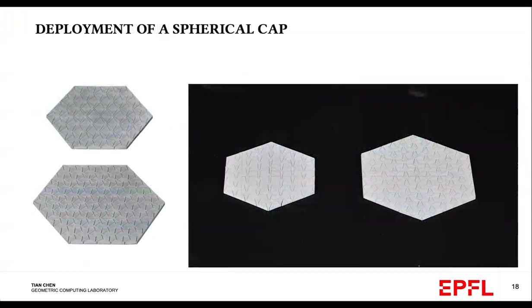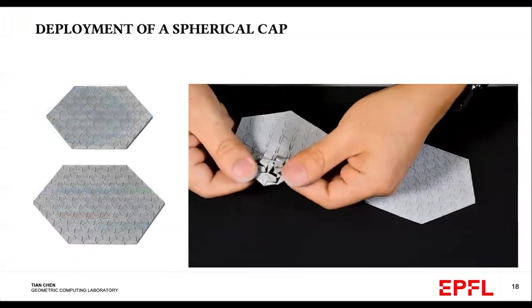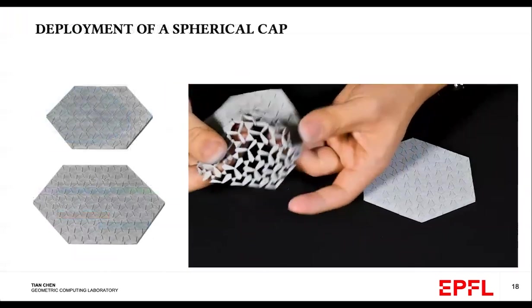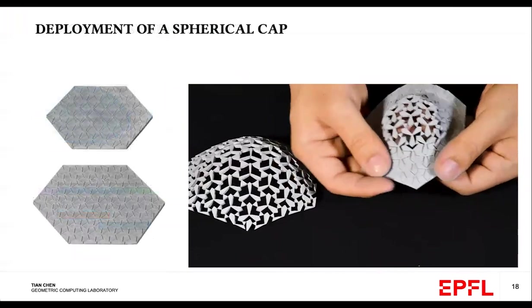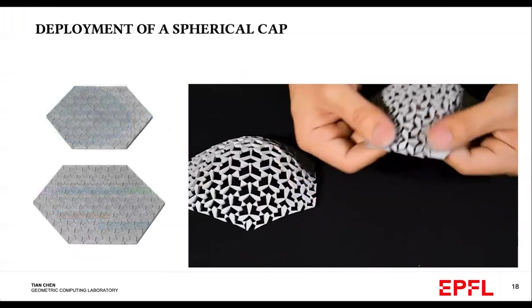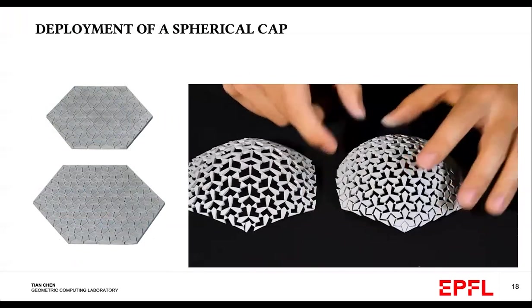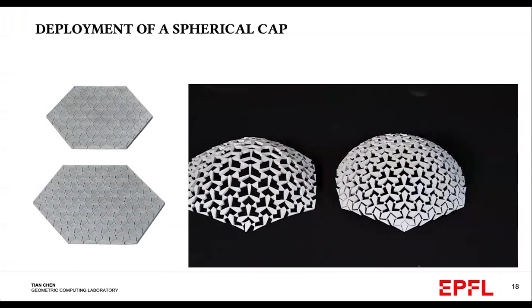And here to fabricate the specimens, this is a sequence of me opening both versions of the spherical cap. Note that by popping open one unit cell, the neighbors get triggered as well in a cascading fashion. This makes the deployment very simple.